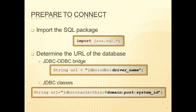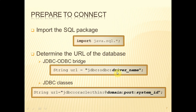Once we've got our driver route sorted out, we connect to the database. The preparation involves three things. First, import the java.sql package — in that package we'll find all the classes we need for interacting with databases. We also need to work out the URL of the database we're connecting to, which will be different depending on the database. If you're using the JDBC-ODBC bridge, you'll use a string like: jdbc:odbc: followed by the name of the driver you created. If you're using JDBC classes, you'll need to consult the database manufacturer for the details of that connection string.